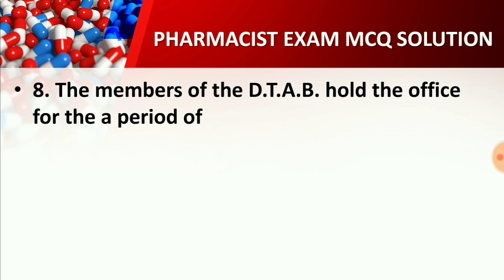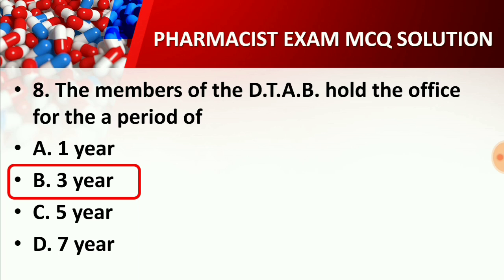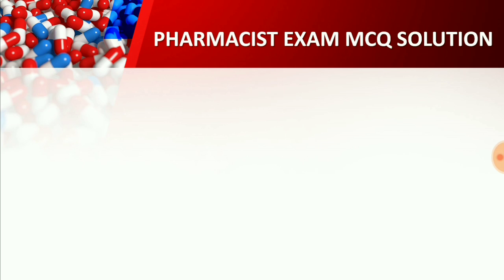Question number eight: The members of DTAB — Drug Technical Advisory Board — hold office for a period of Option A: 1 year, Option B: 3 years, Option C: 5 years, Option D: 7 years. The right answer is Option B: 3 years. DTAB members hold office for a period of 3 years.